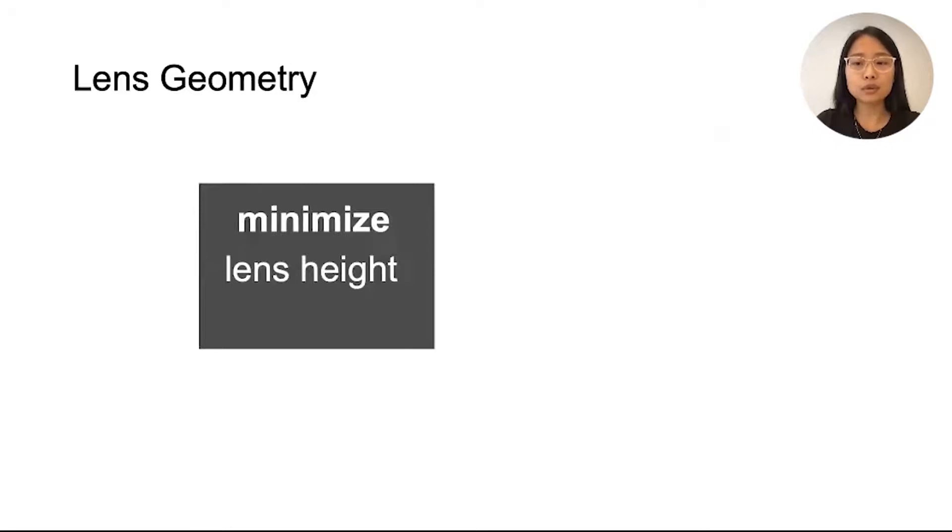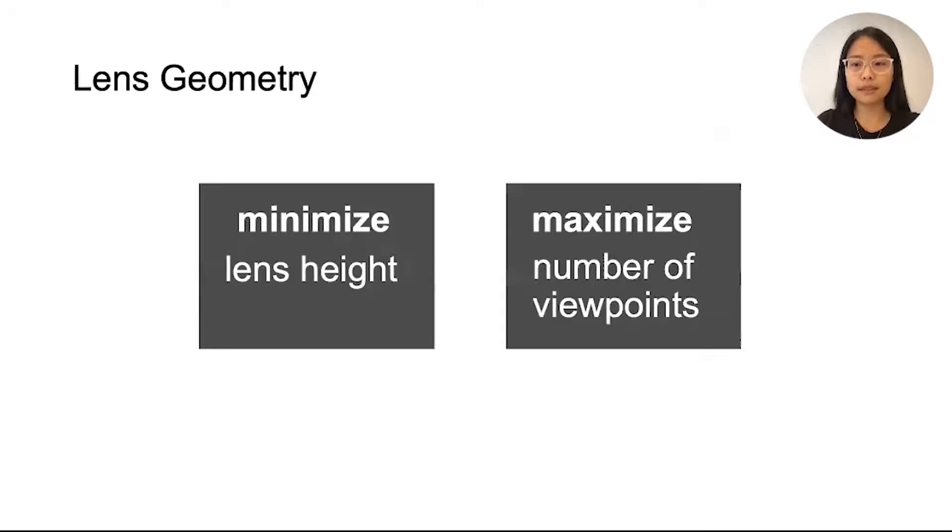If a lens is too tall, it will stick out too much from the original object. And second, we need to maximize the number of viewpoints that each lens can support.